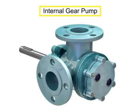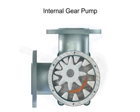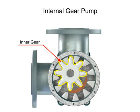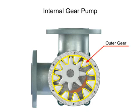Internal gear pumps are exceptionally versatile. This type of pump has one inner gear which is inside a second outer gear. The inner gear has a shaft driven by a motor and has teeth that protrude outward. The outer gear has teeth that protrude inward toward the center of the pump.